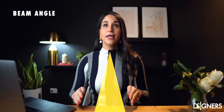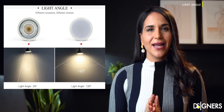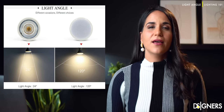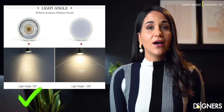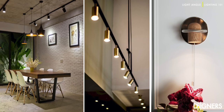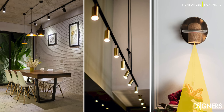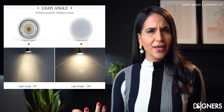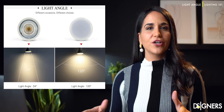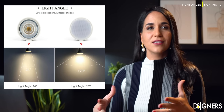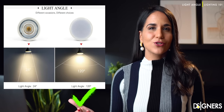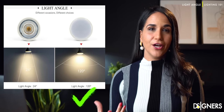The beam angle of a lamp is the angle at which the light is distributed or emitted. If you want to highlight a specific object, then a spot angle could be the right choice. On the other hand, a wide angle gives a more general and softer light — the perfect choice to light up a wide area.